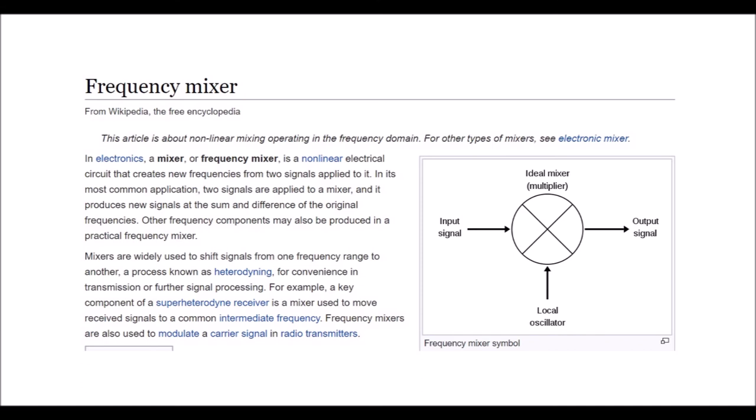Frequency mixer. In electronics, a mixer, or frequency mixer, is a non-linear electrical circuit that creates new frequencies from two signals applied to it. In its most common application, two signals are applied to a mixer, and it produces new signals at the sum and difference of the original frequencies. Other frequency components may also be produced in a practical frequency mixer. Mixers are widely used to shift signals from one frequency range to another, a process known as heterodyning, for convenience in transmission or further signal processing. For example, a component of a superheterodyne receiver is a mixer, used to move received signals to a common intermediate frequency. Frequency mixers are also used to modulate a carrier signal in radio transmitters.